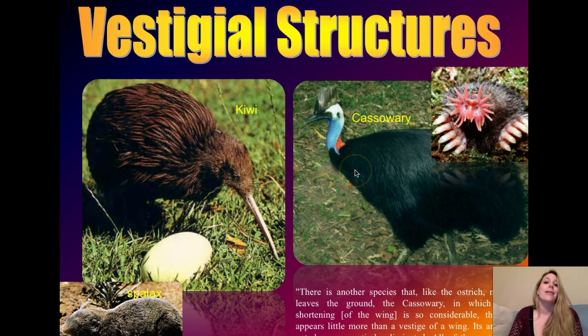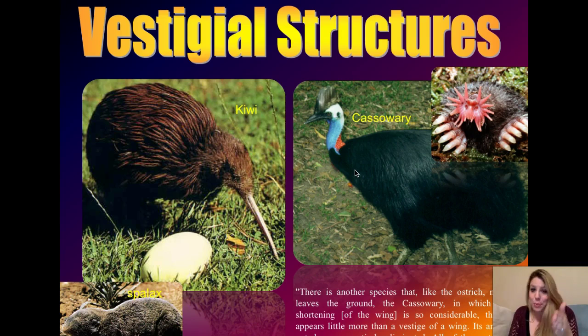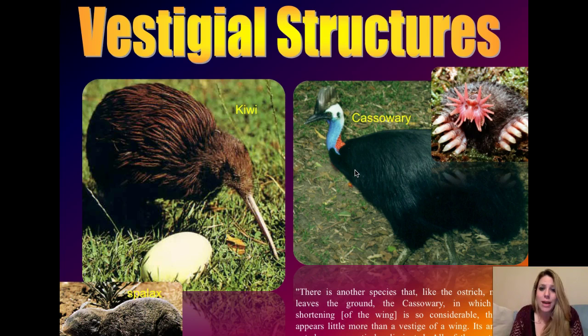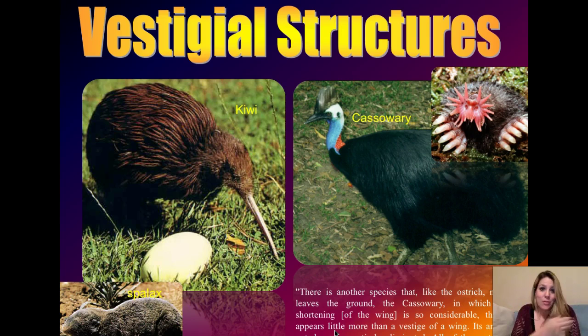The cassowary is similar. This mean guy lives in Papua New Guinea — if you get near him, he will gut you with his claws. He's put his energy towards really good claws and doesn't fly either. He has tiny vestigial wings that are really gone — they're under the skin. One of the early explorers to that area noted that the wings really aren't there, but if you look under the skin, the bones of the humerus and forearm, just like we have, are still there.